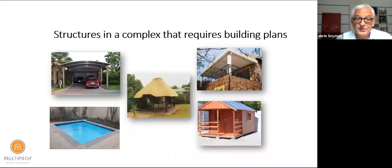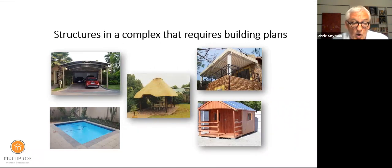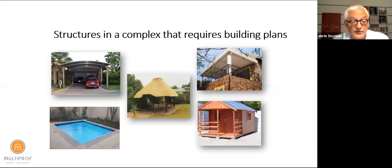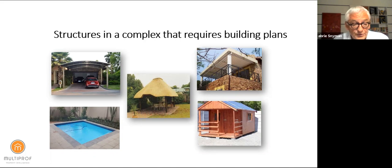The typical structures that cause problems: first, carports — all carports need building plans, even carports with shade netting, because you can't see through shade netting from the top. It will be added as coverage and needs to be indicated on a plan. Second, swimming pools — all swimming pools need building plans and must indicate the safety features to prevent children from drowning.